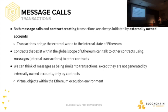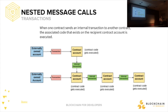Message calls and contract creation transactions are always initiated by externally owned accounts. You can think of transactions as bridging the external world to the internal state of Ethereum. Contracts within the global scope of Ethereum can talk to other contracts using messages — another way to think of messages is as internal transactions. They're simply transactions that exist only in the Ethereum execution environment — virtual objects that exist solely between contracts. Think function calls, think sending data between two autonomous agents.